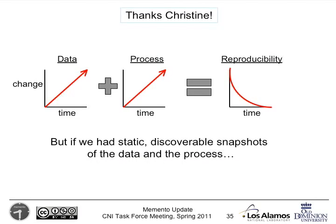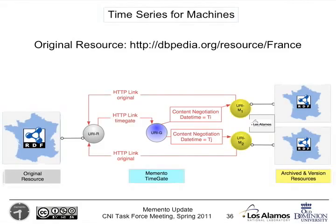As data becomes more dynamic and processes become more dynamic, reproducibility tends towards zero. However, if we had static and discoverable snapshots of both the data and the process, then we could have at least points in time in which reproducibility was possible. For example, there is a linked data version of Wikipedia called DBpedia. They take the information from Wikipedia, scrape out everything they can, put it into RDF, and publish it for every single page that has an infobox. They do this every six months and currently throw away all previous versions — thankfully they actually store them in a big dump file, so we can do Memento on them.